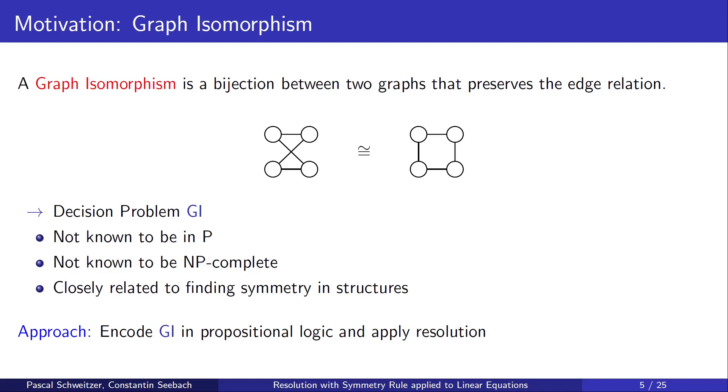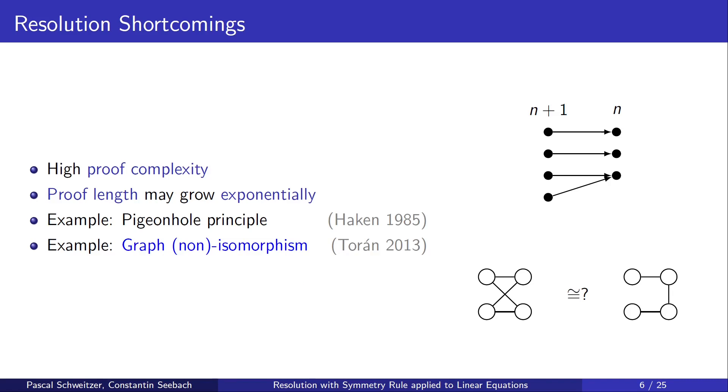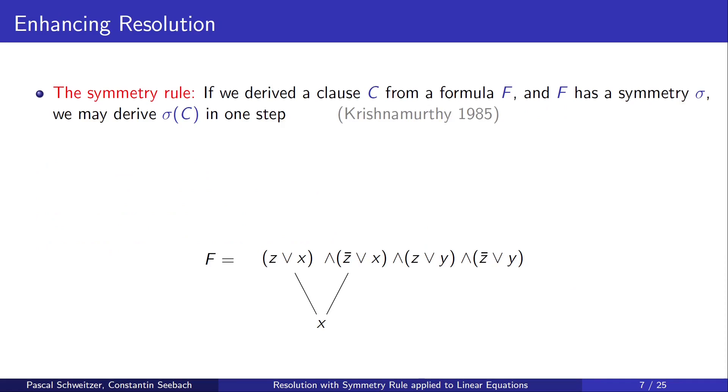We take the approach to encode graph isomorphism in propositional logic and then apply resolution. Resolution has some problems, mainly its high proof complexity. That means the proof length may grow exponentially with the number of input clauses. A classic example for this is the pigeonhole principle. It says that when we map N plus 1 pigeons into N holes, then some hole has to have two pigeons. Showing this using resolution requires proofs of exponential size. Another example is graph isomorphism, or rather showing that two graphs are not isomorphic. And this result is due to Toran.